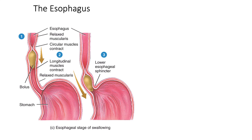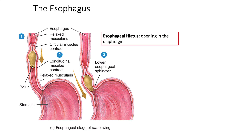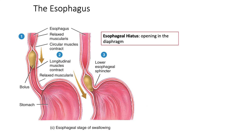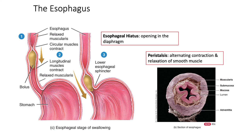The esophagus begins at the base of the laryngopharynx. It passes through the mediastinum and through a hole in the diaphragm called the esophageal hiatus. The tissue that makes up the esophagus is stratified squamous epithelium. At the top and bottom of the esophagus are the upper and lower esophageal sphincters, which are a mix of skeletal and smooth muscle. Food is pushed through the esophagus via peristalsis, which is the alternating contraction and relaxation of smooth muscle. You can see in the cross-section picture of the esophagus the thick layer of smooth muscle in the outer layer of the tube.